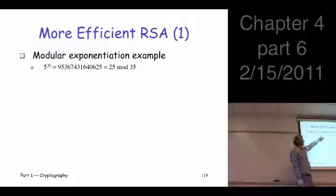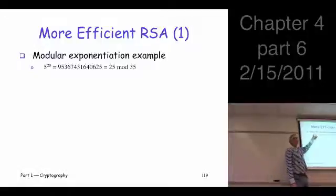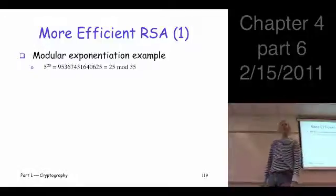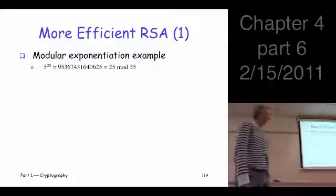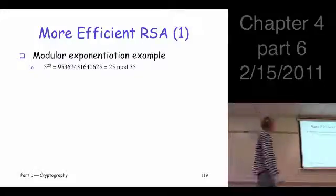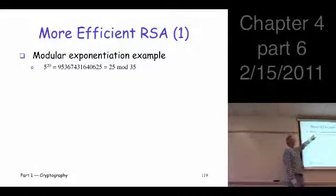So the point is you can just expand this out. You can take 5 to the 20th power and then divide by 35 and see what the remainder is. However, you have a number sitting here that's like a thousand bits, a number here that's hundreds of bits. If you try this, what's going to happen?